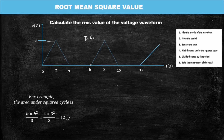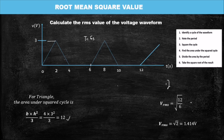The area we had is twelve. To find V-RMS, we divide the area by the period and then square root the result. When you divide twelve by six you get two. Then you find the square root of two, which gives you 1.414 volts.